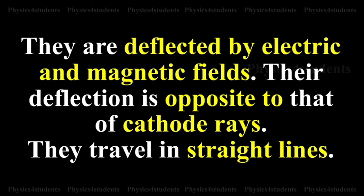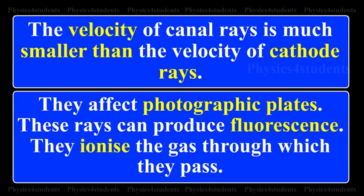They are deflected by electric and magnetic fields. Their deflection is opposite to that of cathode rays. They travel in straight lines. The velocity of canal rays is much smaller than the velocity of cathode rays.